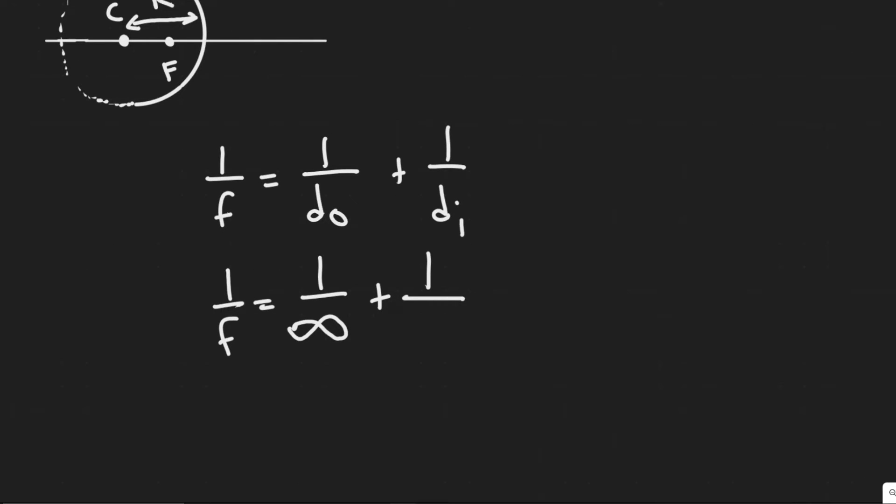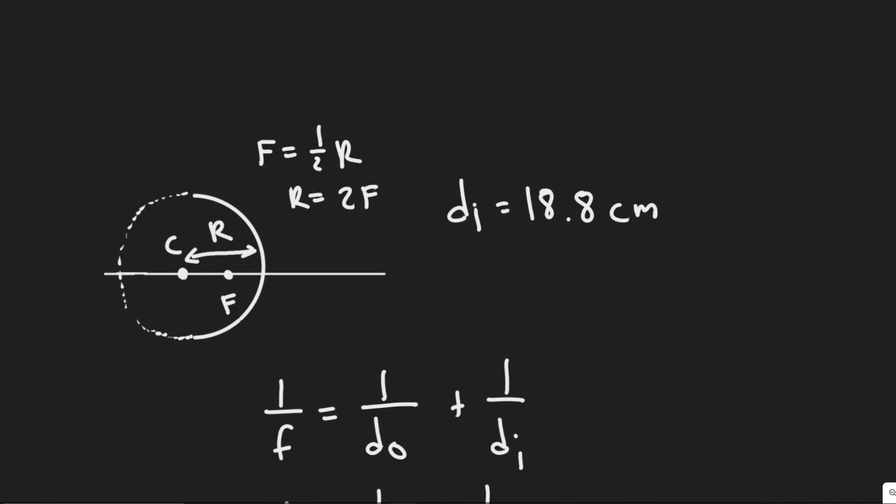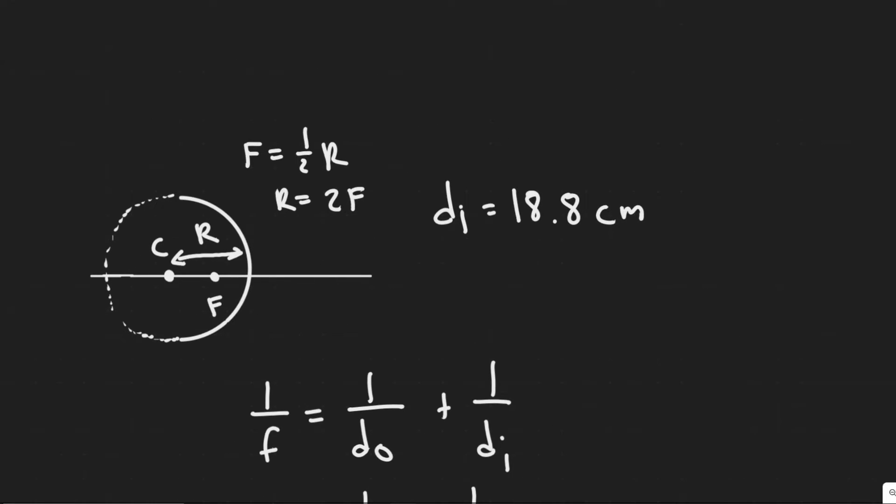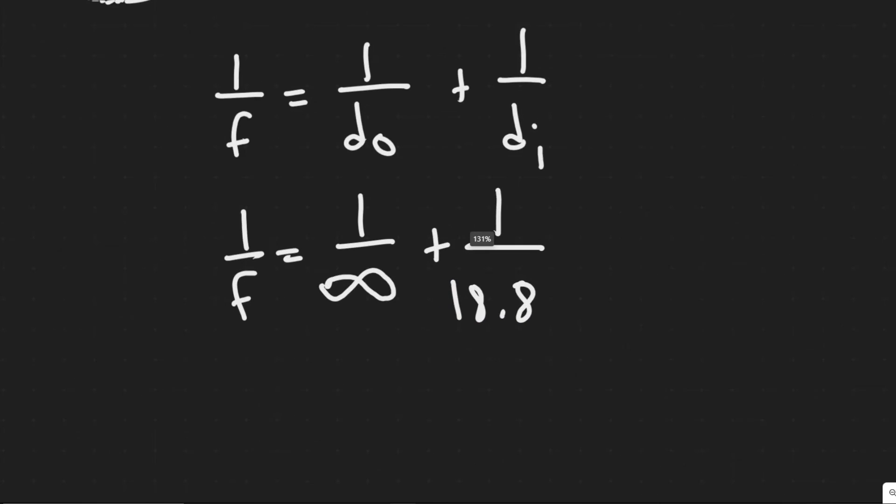And then D I, we know that's going to focus the sun's rays 18.8 centimeters in front of the mirror. So 18.8 centimeters in front is D I. The image created is what they're telling us there. They're telling us we're focusing these rays, and that's your D I or the distance between the image and the lens. So we know D I is 18.8.